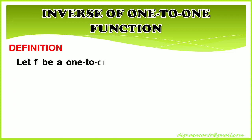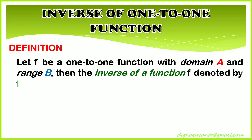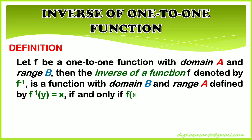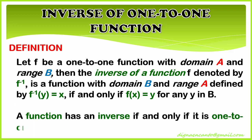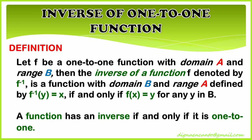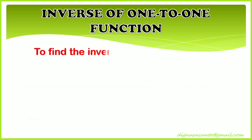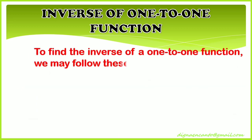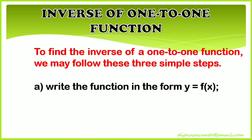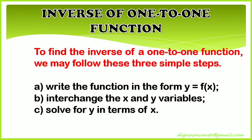Definition: Let f be a one-to-one function with domain A and range B. Then the inverse of a function f, denoted by f⁻¹, is a function with domain B and range A defined by f⁻¹(y) = x if and only if f(x) = y for any y in B. A function has an inverse if and only if it is one-to-one. To find the inverse of a one-to-one function, we may follow these three simple steps: (a) write the function in the form y = f(x), (b) interchange the x and y variables, (c) solve for y in terms of x.